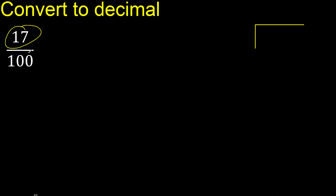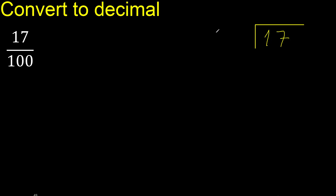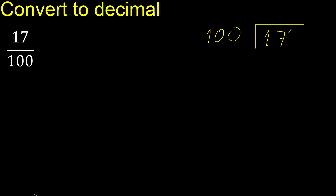17 divided by 100. 17 is less than 100, therefore complete with 0. Point is here.